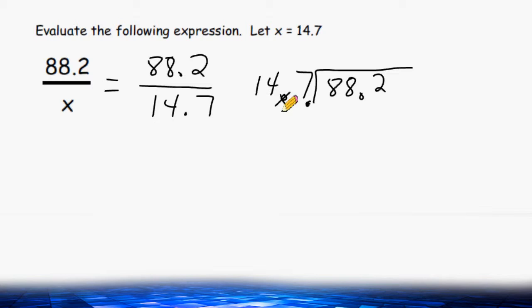Because we move this one place value to the right, this decimal here must move the same amount of spaces. After you move it an equal number of place values, you have to move it straight to the top, and that is where your decimal is going to remain.